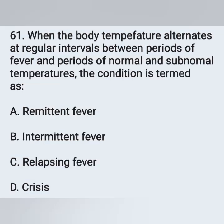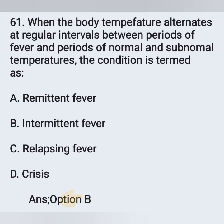Question 61: When the body temperature alters at regular intervals between a period of fever and a period of normal and subnormal temperature, the condition is called: Option A: Remittent fever, Option B: Intermittent fever, Option C: Relapsing fever, Option D: Crisis. This is known as intermittent fever — Option B is the correct answer.